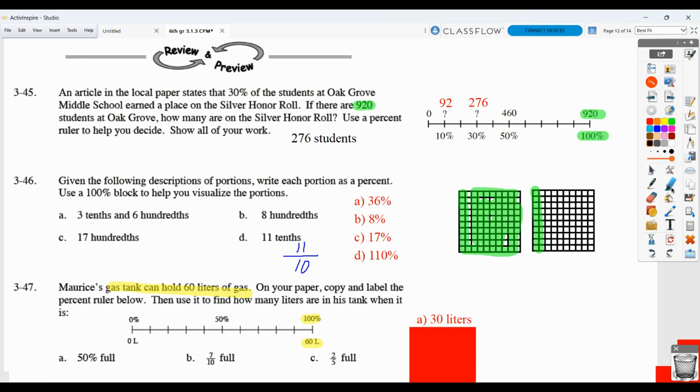Seven tenths full. Well, each of these is a tenth. So one, two, three, four, five, six, seven. This is seven tenths. The question is though, how many liters is that? Well, if a hundred percent is 60 liters, that means each set of 10% is six liters. So this is six. Another six would make 12, 18, 24. We already said 50% was 30. And then this would be 36 and this would be 42. So 42 liters. Again, that's because each section is representing six liters and we need seven sections.